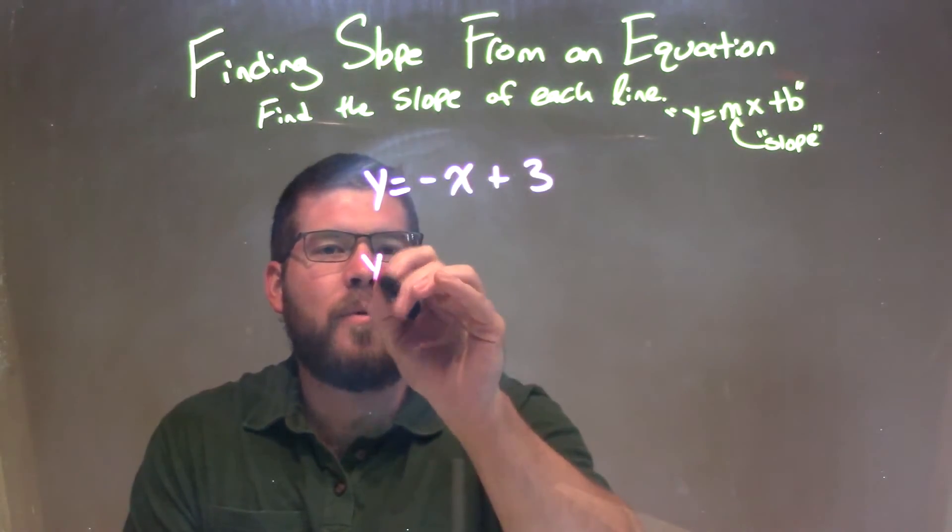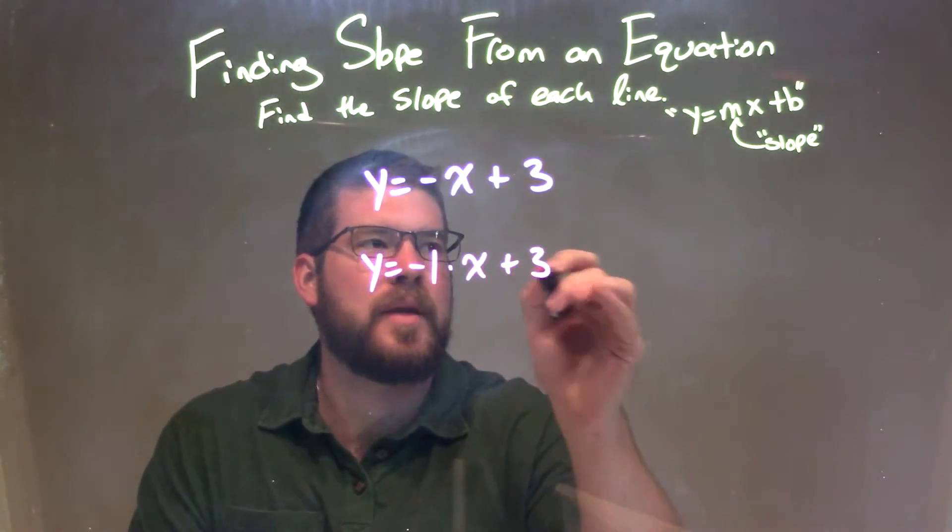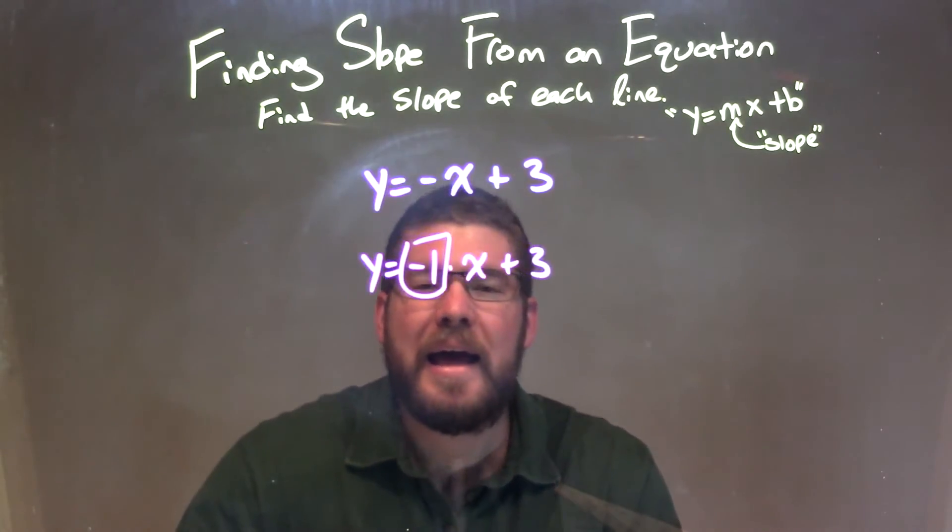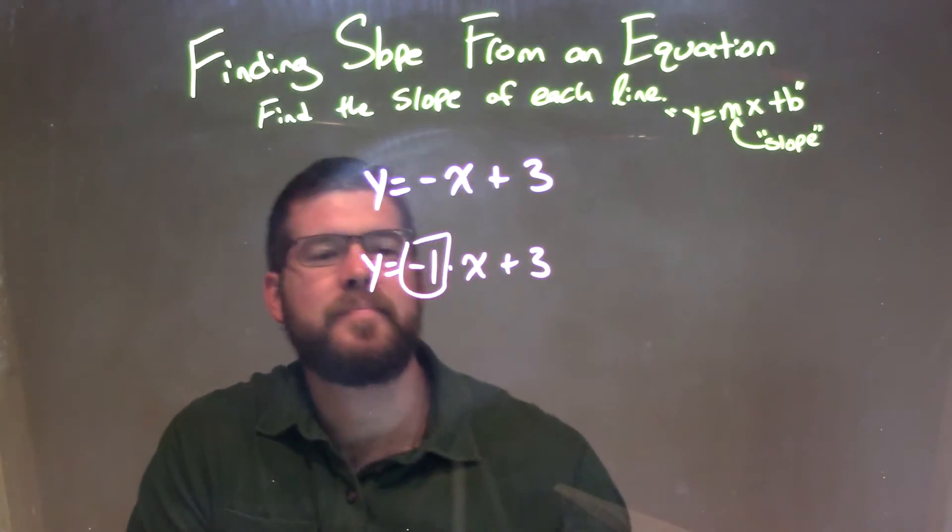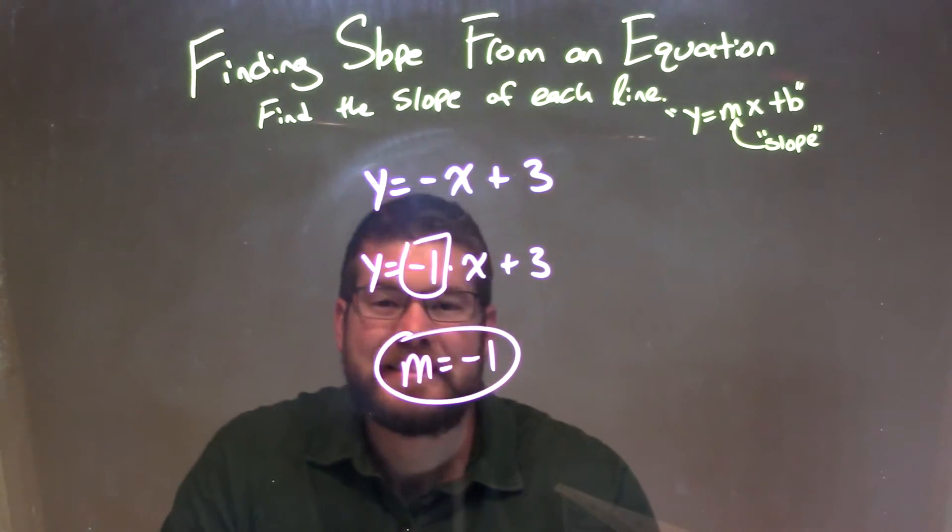So really what this looks like is y equals negative 1 times x plus 3. And that's where we have our m value. Now we can more easily see our m value by itself isolated. And so we have our slope here, m equals negative 1, and that's it.